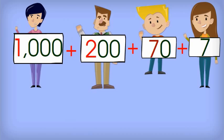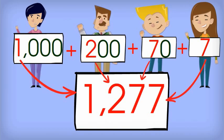$1,000 plus $200 plus $70 plus $7 is equal to $1,277.